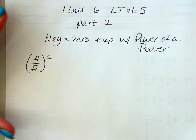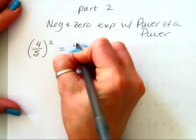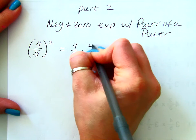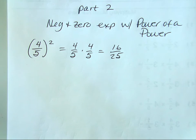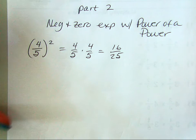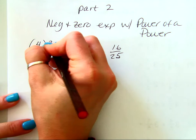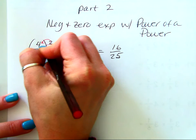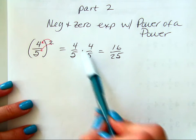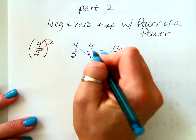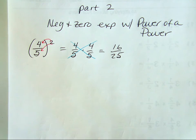4 fifths squared is the same as 4 fifths times 4 fifths, which is 16 over 25. When you square a fraction, it means you square both the numerator and the denominator. So this intermediate step really isn't necessary.